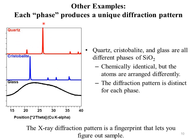In the case of quartz you have many sharp peaks, and similarly for cristobalite you have many peaks. But in the case of glass, there are no clear sharp peaks. We can say that the X-ray diffraction pattern is a fingerprint that lets you identify the sample — whichever diffractogram matches a specific compound confirms the identity of that compound.